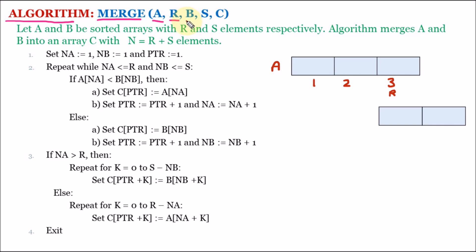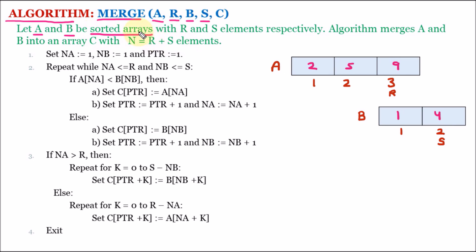We have the next array, which is b, and the size of array b is s. The index values start from 1 and 2, meaning b has size s which is 2. In array a, we have elements 2, 5, and 9. Similarly, in array b we have elements 1 and 4. So we are taking arrays a and b — these are two sorted arrays with r and s elements respectively.